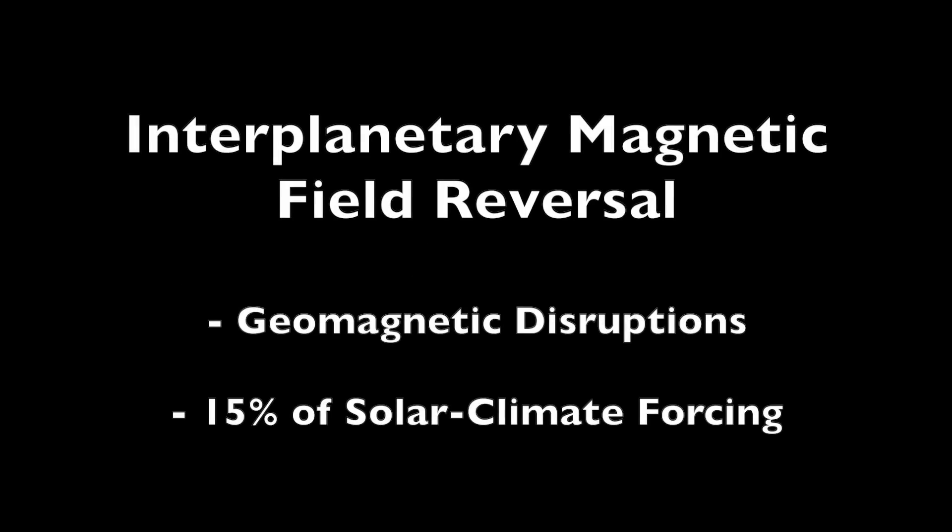These are actual magnetic reversals of the solar wind electric field environment in which the planets orbit, and they happen fairly regularly. Every three to seven days we are hit by this reversal and they cause minor geomagnetic disturbances and actually account for about 15 percent of the more than a thousand scientific papers on solar climate forcing.